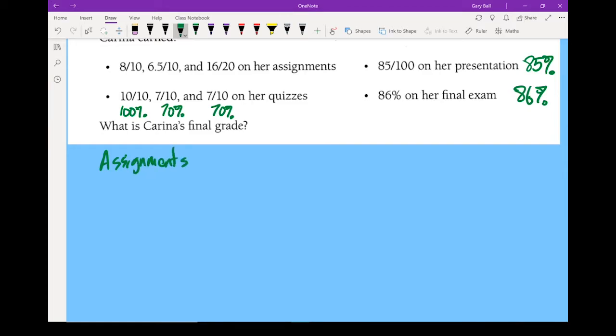So when we've got our assignments, we've got one is an 8 out of 10, one is a 6.5 out of 10, and one is a 16 out of 20. Now this is not, we're not going to add fractions together the proper way. What I know is we've got a total of 40 marks.